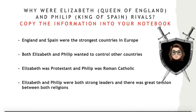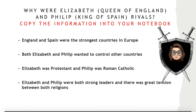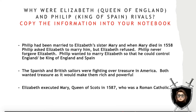Once you've finished reading, copy this information into your notebook: England and Spain were the strongest countries in Europe. Both Elizabeth and Philip wanted to control other countries. Elizabeth was Protestant and Philip was Catholic. Elizabeth and Philip were both strong leaders and there was great tension between both religions. You can copy it from this screen or from the PowerPoint attached in Google Classroom.